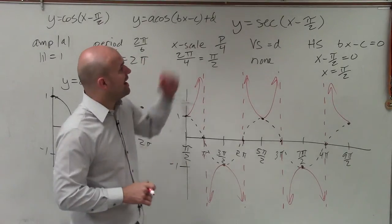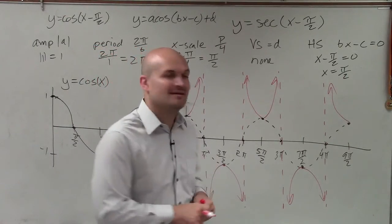So there you go, ladies and gentlemen. In the red is your y equals the secant of x minus pi halves. Thanks.